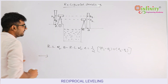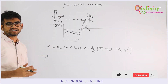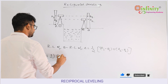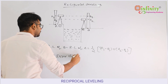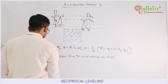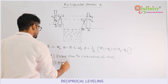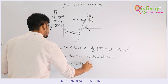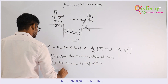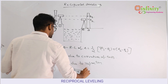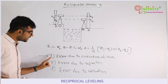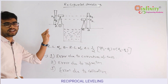If you conduct reciprocal leveling, it will eliminate some errors. The three errors eliminated are: first, error due to curvature of the earth; second, error due to refraction; and third, error due to collimation, that is the collimation error. These three kinds of errors are eliminated in reciprocal leveling.